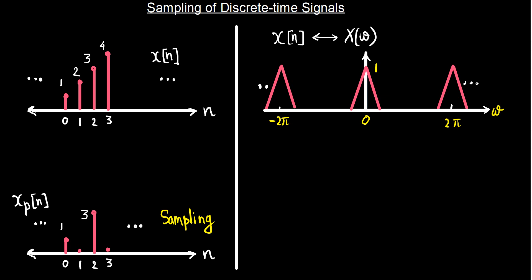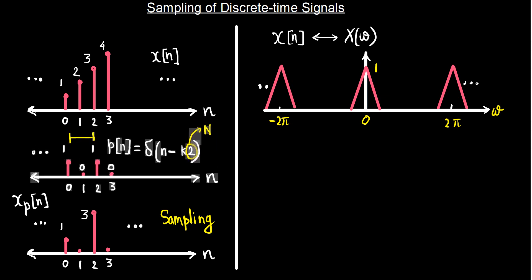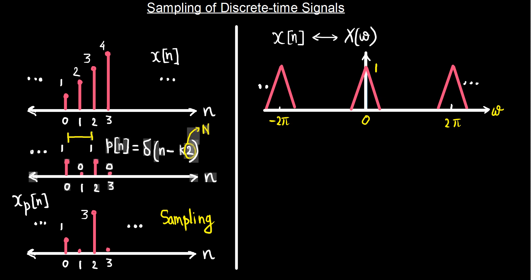And 0 at the locations where we want to remove samples. This signal is again a train of impulses with impulses located at every alternate position. Let that signal be indicated by p(n), which we can write as a sum of δ(n − kM) for integer multiples of the sampling factor. As mentioned, the sampling is by a factor of 2, but we may also have sampling by a factor of 3 or 4.